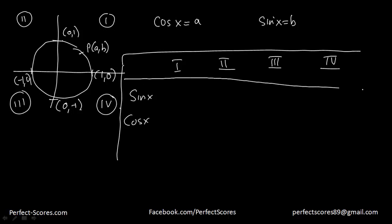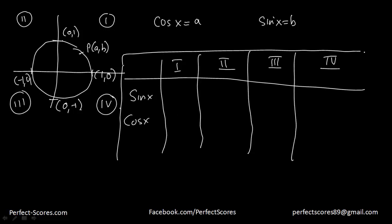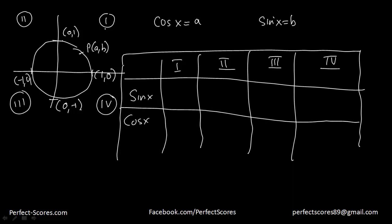Cosine of x equals a, and sine of x equals b. In the first quadrant, b is positive, so sine x is positive. In the second quadrant, the y-coordinate is still positive, so sine x is still positive. Looking at the sign of the coordinates: first quadrant is (+, +), second is (-, +), third is (-, -), and fourth is (+, -).